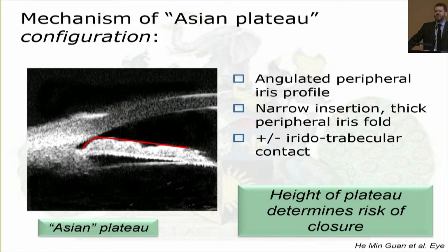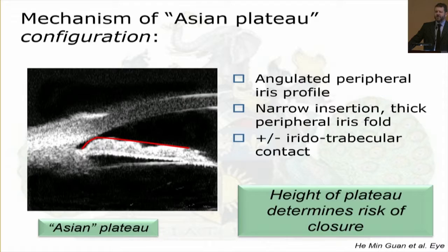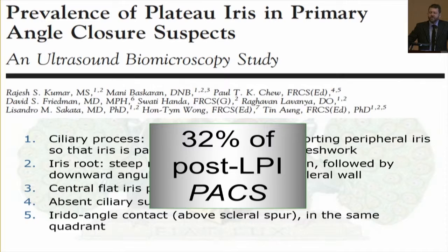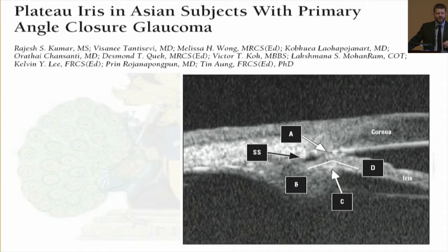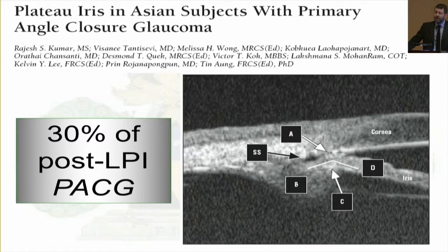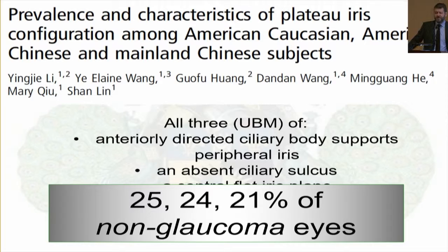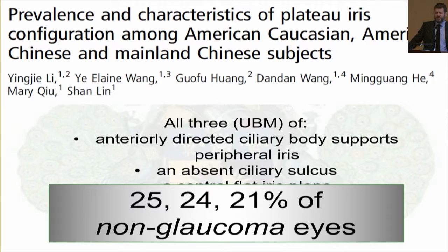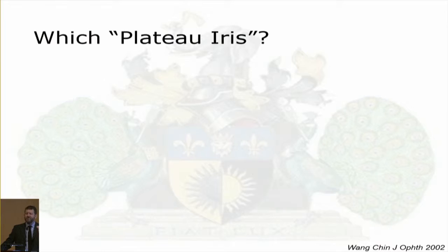It is important to do gonioscopy after iridotomy and after lens extraction, because some patients don't open up even after clear lens extraction. In some studies, 30% of primary angle closure suspects with normal pressure still had significant iridotrabecular contact after iridotomy. In Asian angle closure, 30% of angle closure glaucoma had residual iridotrabecular contact. In non-glaucomatous eyes, around a fifth could be diagnosed with plateau-type configuration — so having that shape doesn't necessarily mean treatment.